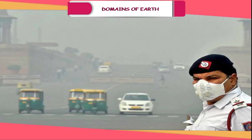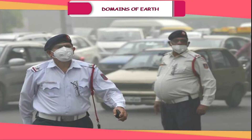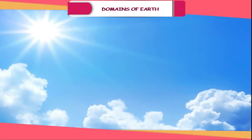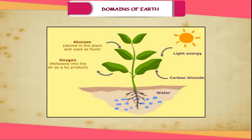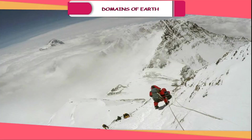Oxygen is the breath of life while Nitrogen helps in the growth of living organisms. Carbon dioxide, though present in a minute amount, is important as it absorbs heat radiated by the Earth, thereby keeping the planet warm. It is also essential for the growth of plants, as plants manufacture their food by the process of photosynthesis.